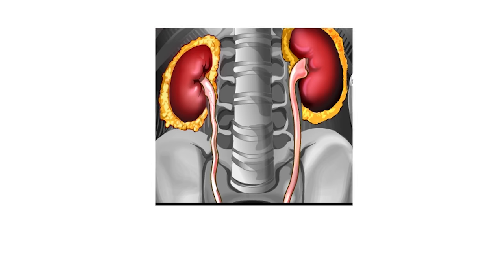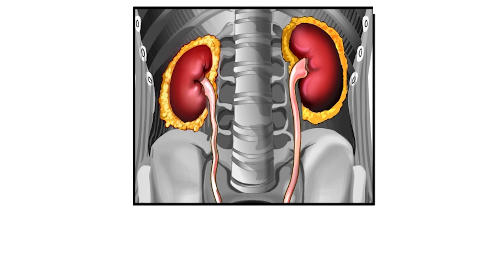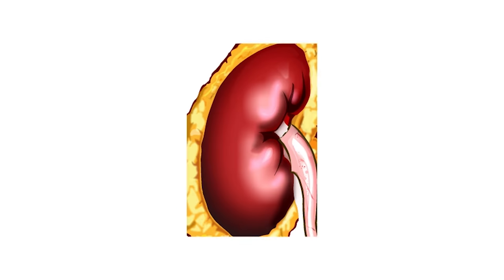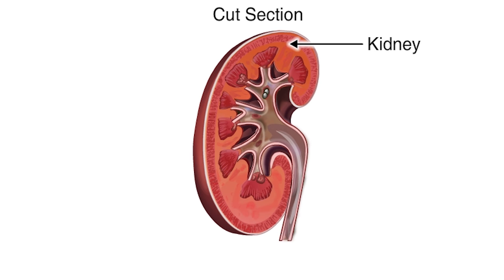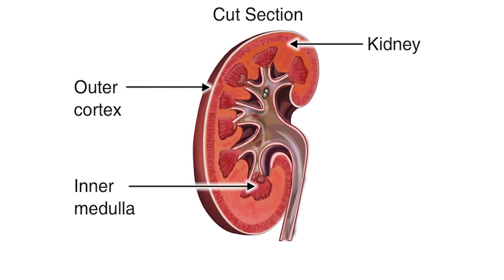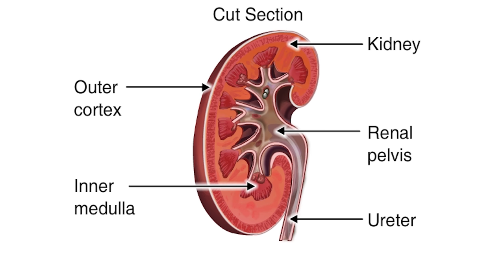Now let's enlarge the kidney to get a closer view. Here's a cross-section of the kidney. Urine flows from the outer cortex to the inner medulla. The renal pelvis is the funnel through which urine exits the kidney and enters the ureter.